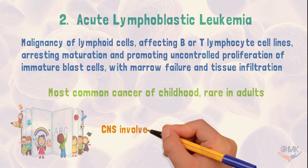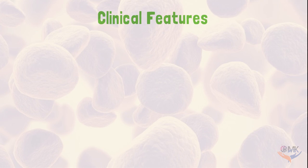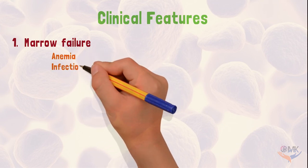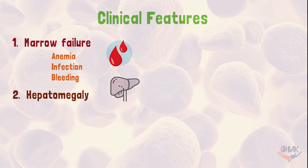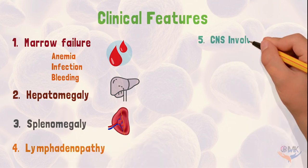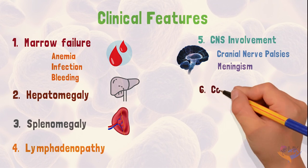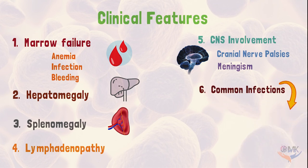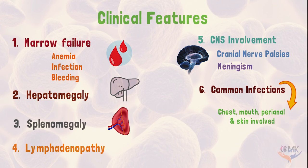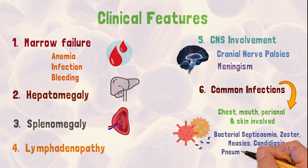CNS involvement is a characteristic feature of this type of leukemia. Clinical features include marrow failure — anemia, infection, bleeding — as well as hepatomegaly, splenomegaly, and lymphadenopathy. CNS involvement includes cranial nerve palsies and meningism. Infections most commonly associated with this disease involve the chest, mouth, and skin, including bacterial septicemia, herpes zoster, measles, candidiasis, and Pneumocystis pneumonia.